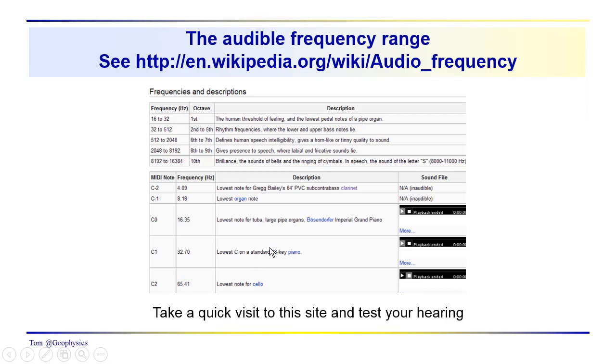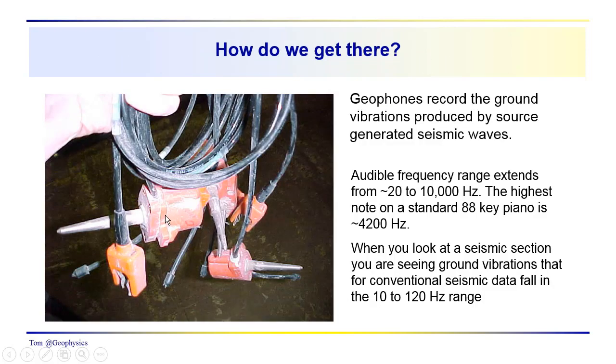It's kind of interesting to see these different frequencies and to listen to them. But we're usually in the seismic domain, in this more or less 10 to 120 hertz range. The data are recorded with geophones. This is a typical geophone. You can see it's got a spike. The audible frequencies, again for humans, are more or less in this 20 to 10,000 hertz range. Highest note on a standard 88 key piano, 4200 hertz. Seismic sections, again, usually in the 10 to 120 hertz range.